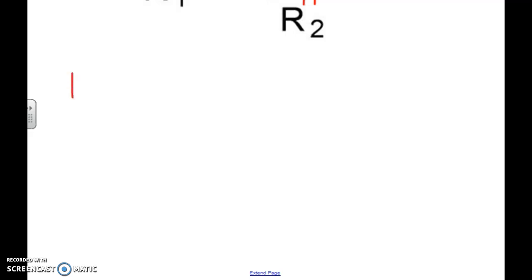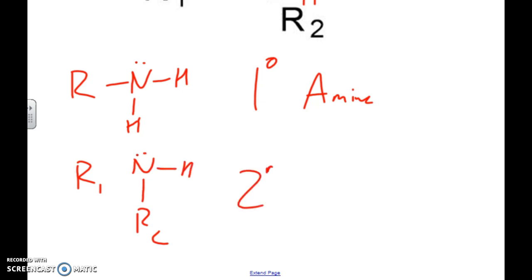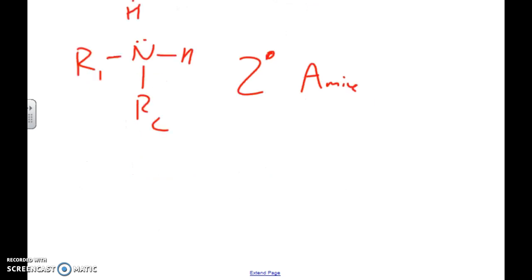We'll have R represent carbon. If you've got a nitrogen attached to one carbon and two hydrogens, this would be known as a primary amine. If you have two different carbons attached to a nitrogen which is attached to a hydrogen, this is known as a secondary amine. Lastly, if you've got a nitrogen attached to three different carbons, this is known as a tertiary amine.